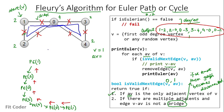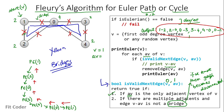This is how we obtain the Euler path or Euler cycle. The concept of bridges is important here — basically we don't want to burn the bridges; we preserve them for completion of the path.